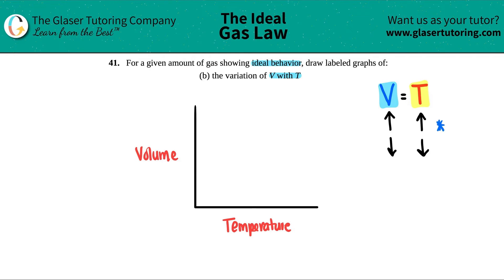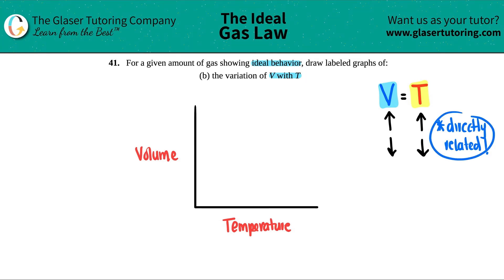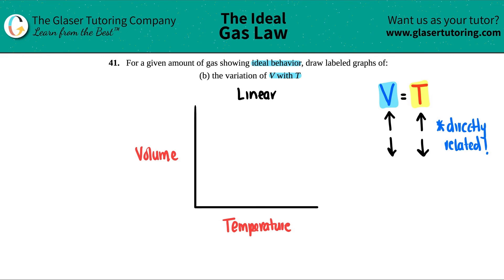We can say that volume and temperature are directly related. A direct relationship means if one thing increases, the other thing increases. So V and T are directly related — that's a linear relationship. As temperature rises, so does the volume. So this is going to be a linear graph. I'll make it a little straighter using my straightening tool.